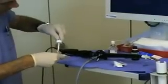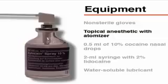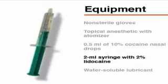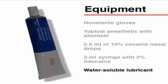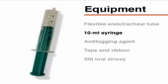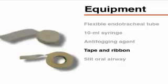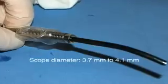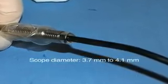Gather the necessary equipment. You will need non-sterile gloves, a topical anesthetic with atomizer, 0.5 ml of 10% cocaine nasal drops for vasoconstriction and local anesthesia of the lower nasal cavity, a 2 ml syringe with 2% lidocaine for local anesthesia of the larynx and proximal trachea, a water-soluble lubricant, a flexible armored silicone endotracheal tube with an internal diameter of 6 mm, a 10 ml syringe, an anti-fogging agent, tape and a ribbon to fix the tube in place, and a slit oral airway for the oral approach. The diameter of the flexible fibroscope should be between 3.7 and 4.1 mm.